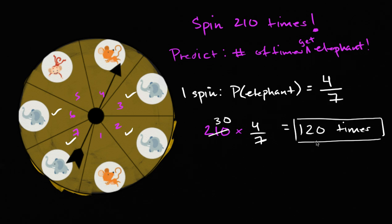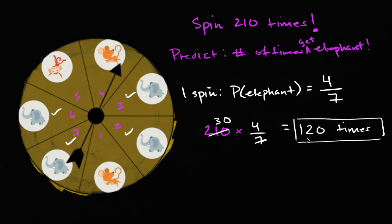It's very important to think about what this is saying and what it is not saying. Is it possible that I get an elephant 121 times, or maybe 119 times? Sure. It's completely reasonable that you might get something different. In fact, there's some probability that you get no elephant — if you just happen to keep landing on the monkey or one of the mice. Now, it's a very low probability that that would happen if you spin it 210 times, but it is possible. There's actually a possibility that you might get an elephant on all 210 spins — again, a low probability, but possible. So this isn't saying you're definitely going to get the elephant 120 times. It's very reasonable that you might get it 123 times, or 128 times, or 110 times, or even 90 times. These are all completely reasonable things to happen.